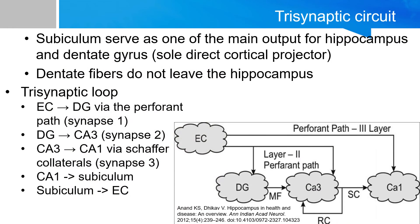The other output pathway is the subiculum, which serves as the main output for the hippocampus and dentate gyrus, and is actually the sole direct cortical projector for both the hippocampus and the dentate gyrus.